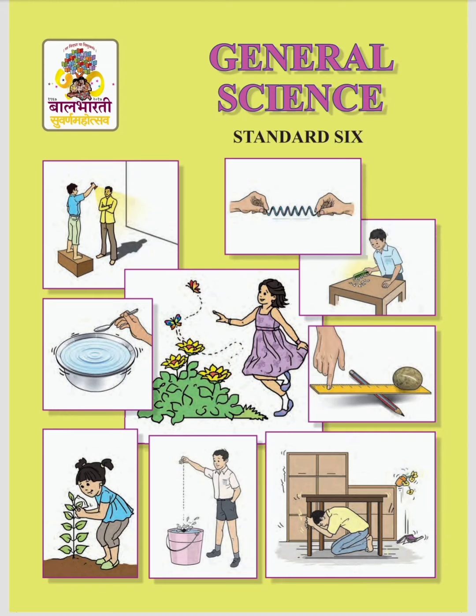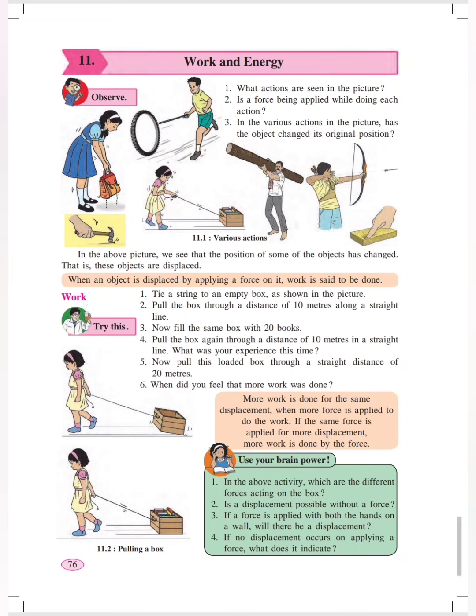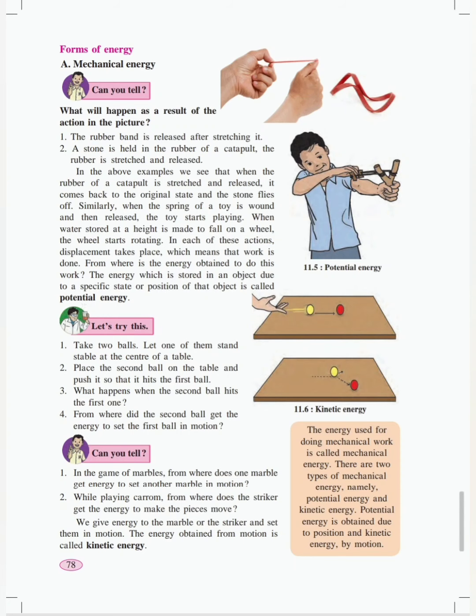Students, let's start with the first point, mechanical energy, under the point forms of energy. Basically, there are two types of energies under mechanical energy: one is potential energy and the other is kinetic energy.